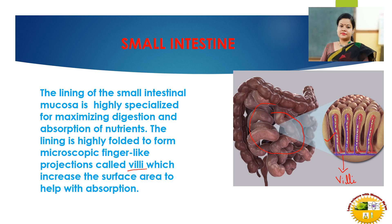These finger-like projections increase the surface area of absorption. The small intestine is the place where not only digestion is completed, but also digested food is absorbed and sent to different parts of the body. The villi increase the surface area of absorption to maximize absorption.